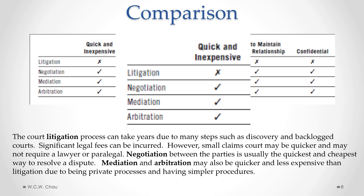With negotiation, it is usually the quickest and cheapest way to resolve a dispute — you're not involving any lawyers, and it's just a discussion between the parties involved where they work out the dispute on their own. The other methods of ADR, mediation and arbitration, may also be quicker and less expensive than litigation, due to the fact that they involve a private process as opposed to a public one. The parties have full control over the process, and therefore it's likely to be faster. Also, the procedures for mediation and arbitration are usually much simpler than the procedures required in court litigation.